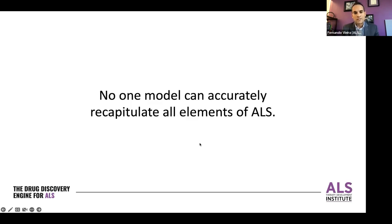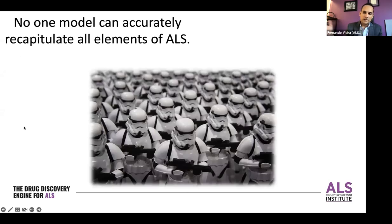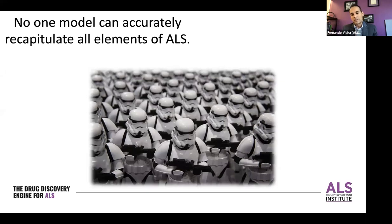I want to start by making the statement that no one model can accurately recapitulate all elements of ALS. If you were to clone an individual with ALS, that one person with ALS would not accurately recapitulate all elements of everybody else's ALS. So it's impossible to have a perfect model. We should instead focus on the research questions we're asking and which models are best deployed to answer those questions.